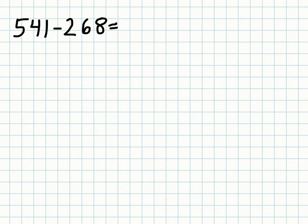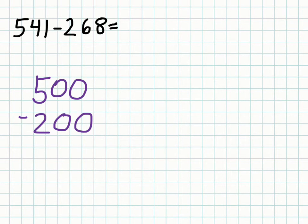Let's try another one. This is three digits now: 541 minus 268. Because we have three digits, we need three columns for this expanded column subtraction. We start with the hundreds place: 500 minus 200 in our first column. Next is the tens place with 40 and 60, and finally the ones place with 1 and 8.